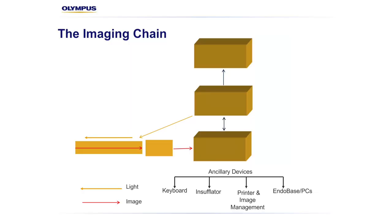So like yourselves, I understand that the abundance of devices used in the medical world can be overwhelming. This video is designed to help simplify the different devices used to generate the surgical image. So what is the Olympus Imaging Chain and how can it help you to understand the process of generating an endoscopic image?